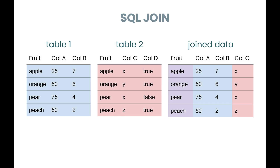There are two basic ways to combine data when working with databases in SQL. One is with JOINs and the other is with UNIONs. A JOIN combines columns from two different tables. In my example, I'm combining columns from table one and table two. In the joined dataset I've got columns A and B from table one and column C from table two, and I'm doing this by saying I want to bring in the column C value from table two when the values for fruit are equal.